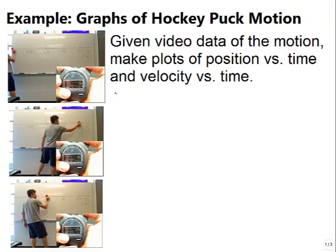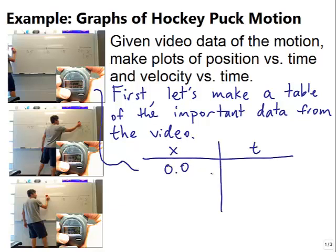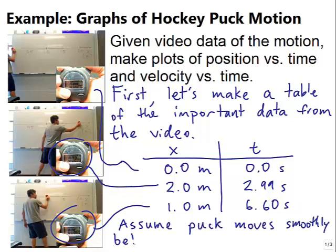Okay, so here are some screenshots from the video you just saw and you're being asked to, given video data of the motion, make plots of position versus time and velocity versus time. So first, let's make a table of the important data from the video. So we have x and t. It starts at x equals 0 at time t equals 0 seconds. That's the first frame when the puck's on the left. At the next frame has x at 2 meters and 2.99 seconds. And the third frame has x back at 1 meter and the time is 6.60 seconds. And what we'll assume is that the puck moves smoothly between these three moments in time.